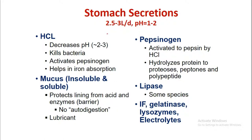Stomach secretion is around 2.5 to 3 liters per day with a pH of 1 to 2. The most important content inside the stomach secretion is hydrochloric acid (HCl), which decreases the pH to around 2 to 3, kills bacteria, and activates pepsinogen — a proteolytic enzyme — to pepsin. It also helps in iron absorption.